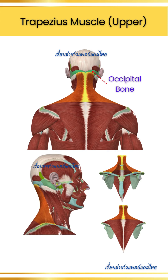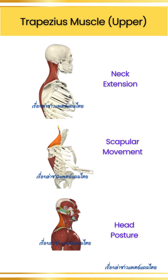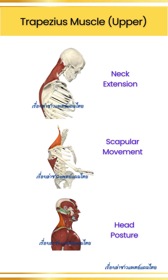Trapezius: this large and diamond-shaped muscle starts from the occipital bone and the upper spine, covering the back of the neck and extending to the shoulders. It assists in neck extension, scapular movement, and head posture.